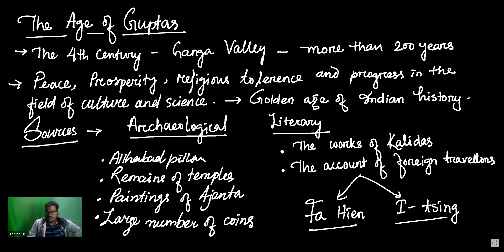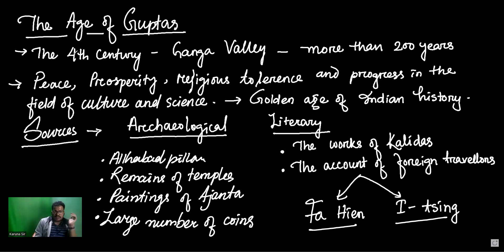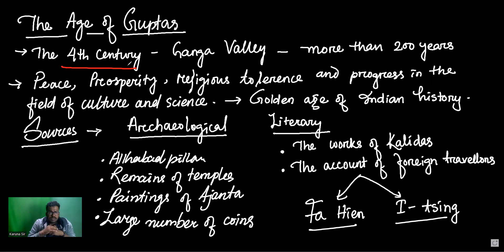So first of all, we're going to discuss about the Guptas. Which century is this happening in? It was the 4th century. In this 4th century, the Guptas started to rise slowly in North India, and particularly in the Ganga Valley region.